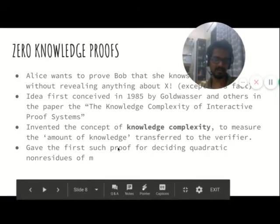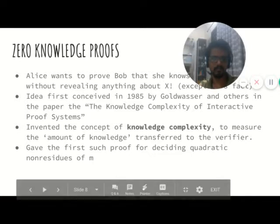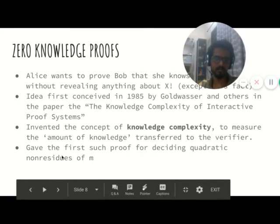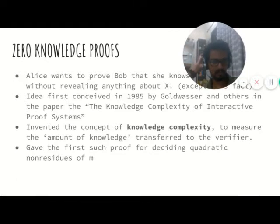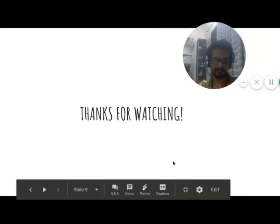One last thing: in the paper, they give an example of such a zero-knowledge proof for deciding quadratic non-residues of M — a number that is not congruent to any k² modulo M. They provided a zero-knowledge proof for that. Thanks for watching.